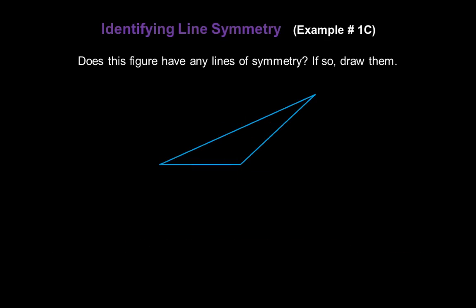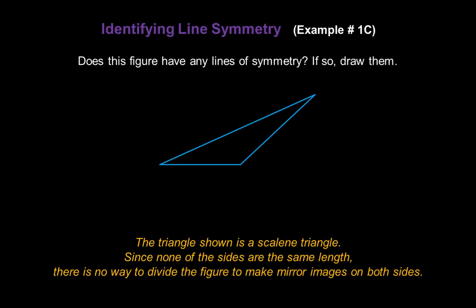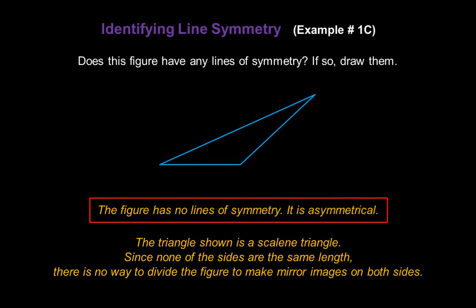Does this figure have any lines of symmetry? And if so, draw them. The triangle shown is a scalene triangle — none of the sides are the same length. Since none of the sides are the same length, there's no way to divide this figure to make mirror images on both sides. This figure has no lines of symmetry. It is asymmetrical.